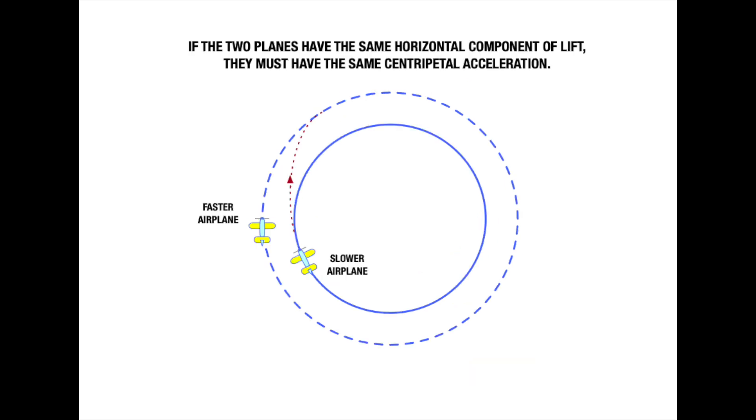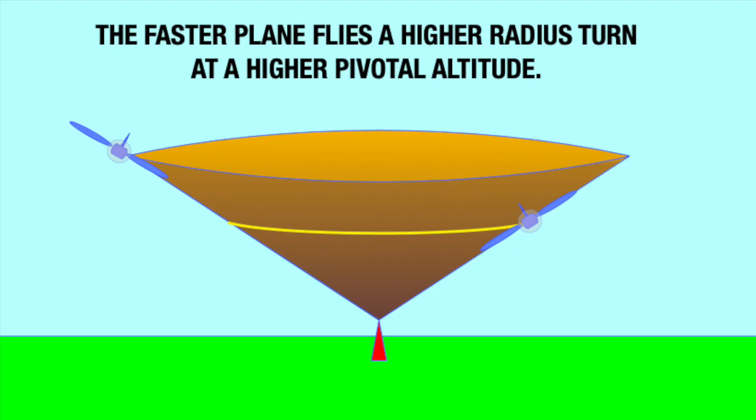So, in a level turn, at a constant bank, if we speed up our airplane, the radius of turn must increase. So, the faster airplane flies a higher radius of turn and, by simple geometry, must fly at a higher altitude to be at the pivotal altitude. And that's all there is.